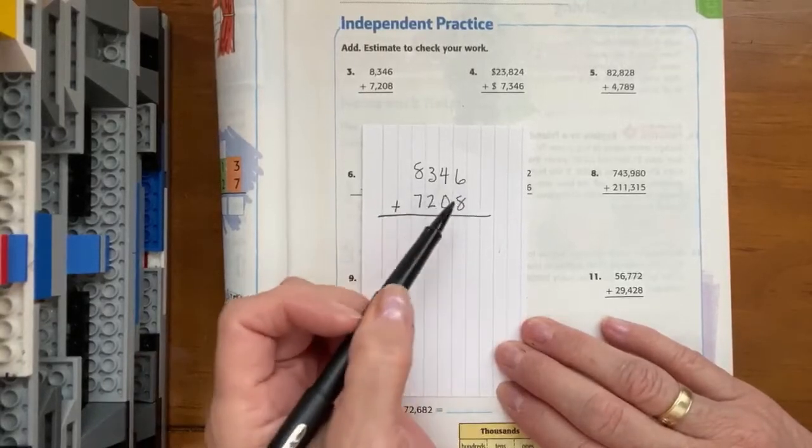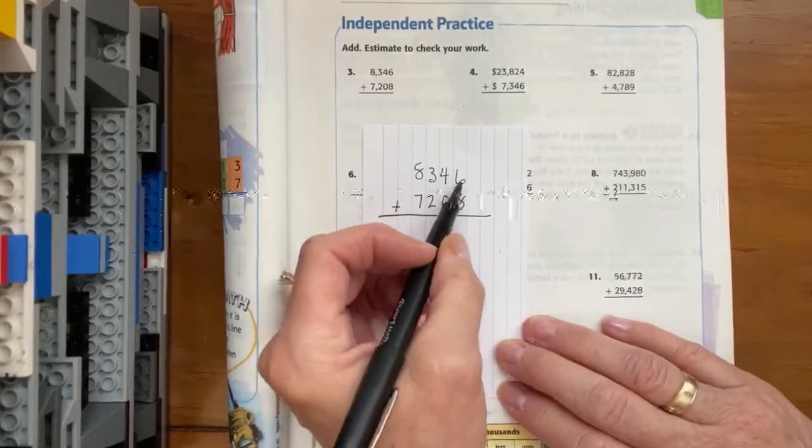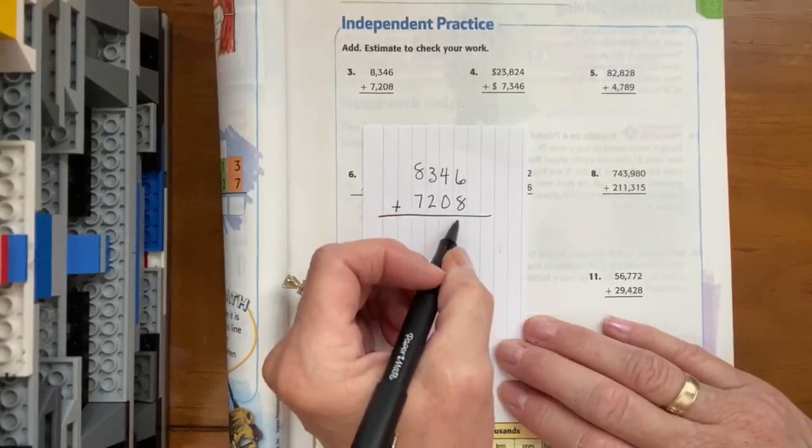So eight plus six is, I don't know, really hard. So I'm going to say eight plus two is ten, plus another four gives me fourteen.